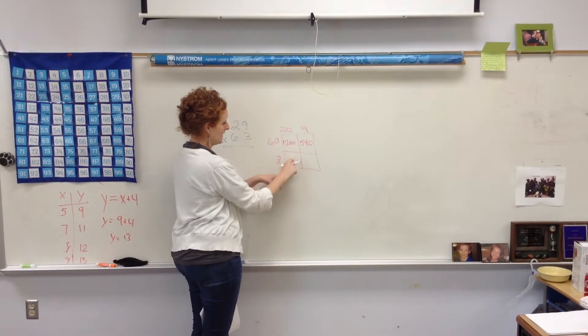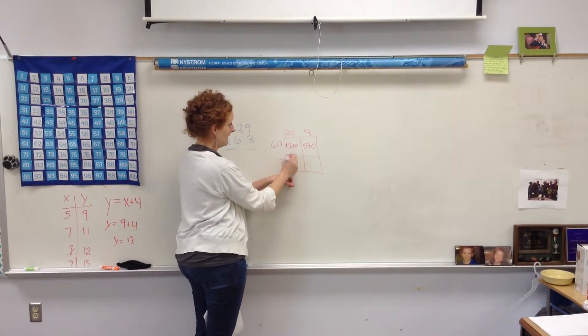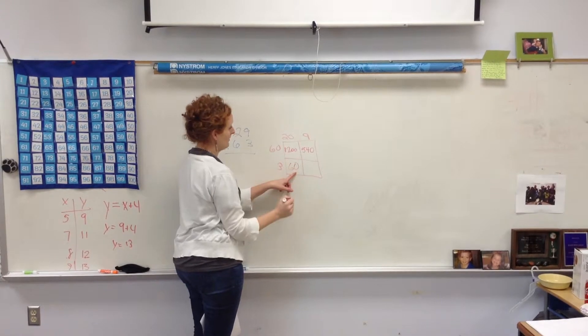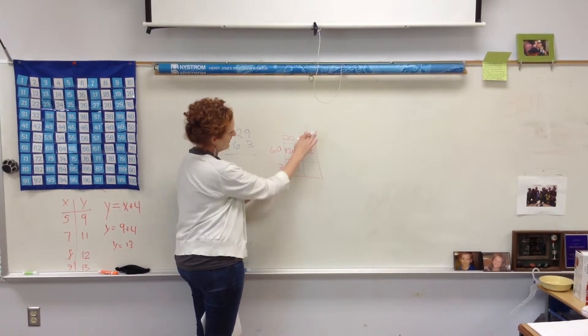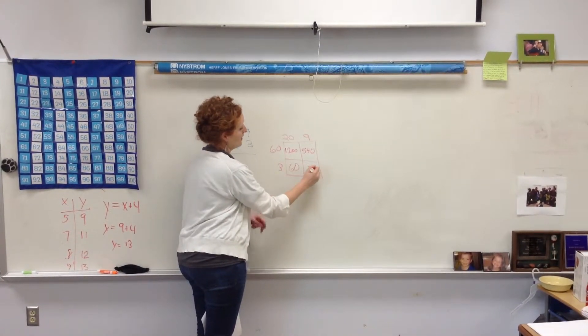Now, come down here, 20 times 3, 2 times 3 is 6. I've got one zero behind there, I put that there. Now, my next one, 3 times 9 is 27. Now, the reason this is called partial product is because I have all these little products, and I have to add them together to get my final one.